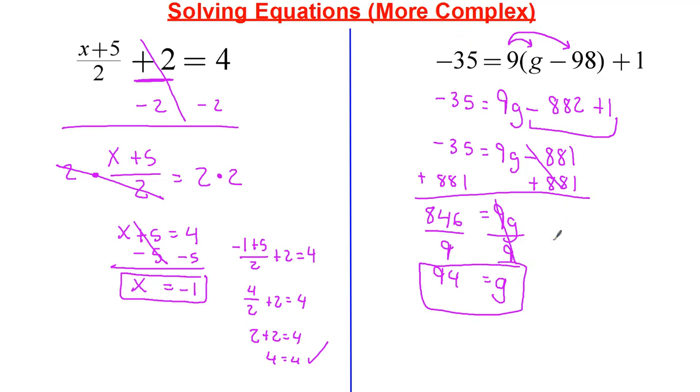Now we can go ahead and plug that back in. Negative 35 equals 9 times 94 minus 98 plus 1. So negative 35. We've got 9. We can just do this in here. 94 minus 98 is going to be equal to negative 4. And then we have negative 35 is equal to negative 36. So that's 9 times negative 4 plus 1. Negative 35 is equal to negative 35. Yeah, that's definitely true. Excellent.